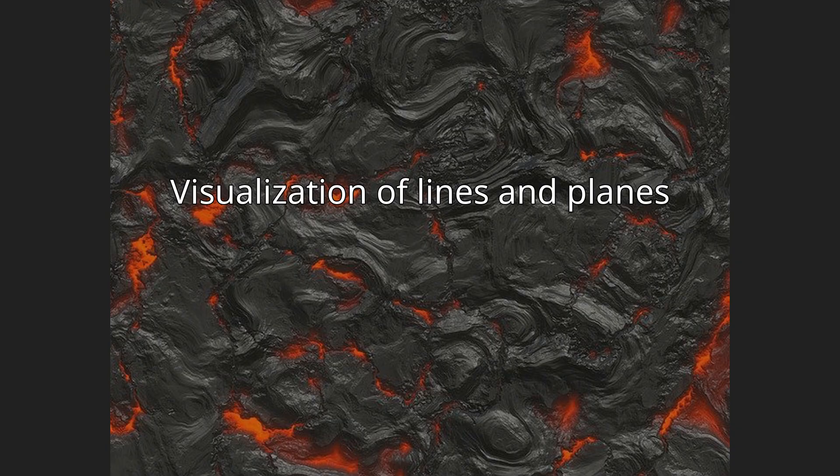The set of all lines through the origin in three-dimensional space forms a space called the real projective plane. This space is difficult to visualize because it cannot be embedded in three-dimensional space. However, one can approximately visualize it as a disk: any line through the origin intersects the southern hemisphere in a point, which can then be stereographically projected to a point on a disk. Horizontal lines intersect the southern hemisphere in two antipodal points along the equator, either of which can be projected to the disk — it is understood that antipodal points on the boundary of the disk represent a single line (see quotient topology). So any set of lines through the origin can be pictured almost perfectly as a set of points in a disk.